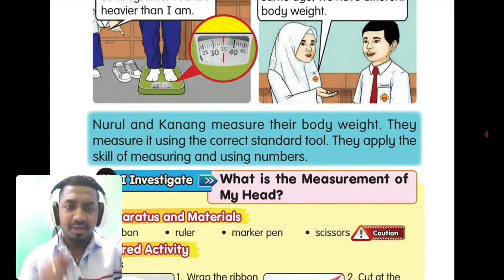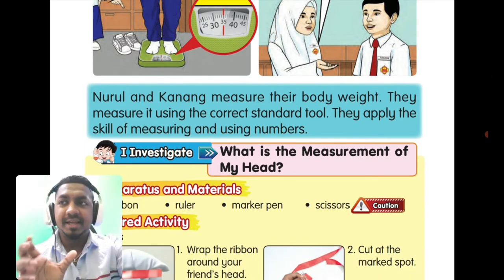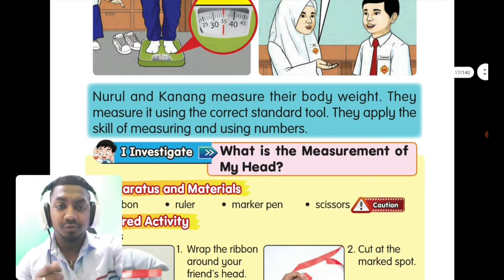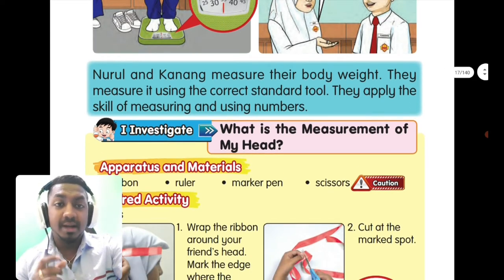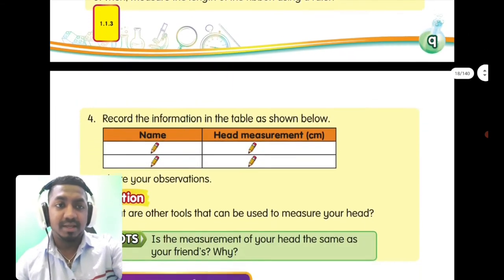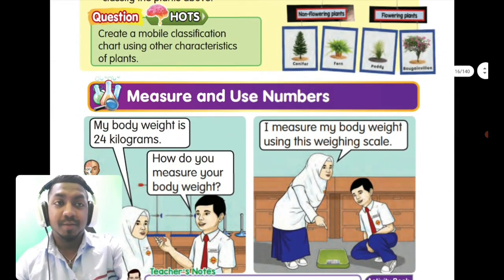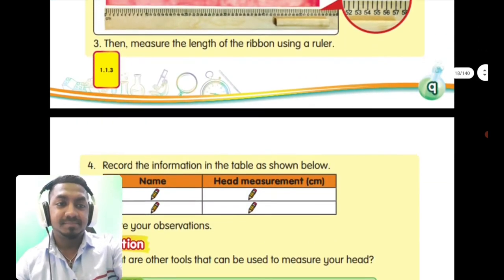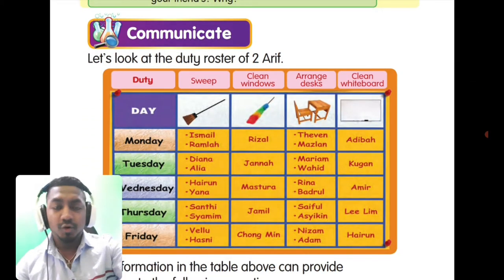Usually you will use a ruler to measure the length of a book or the length of lines. That is the right tool to measure length. We should know what tools are available for certain types of measurements. When you use the right tools, we say you are measuring and using numbers correctly in science.